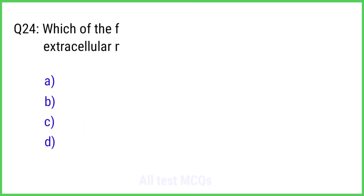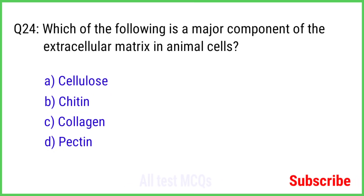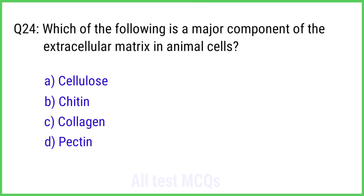Question No. 24. Which of the following is a major component of the extracellular matrix in animal cells? The right answer is Option C: Collagen.